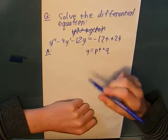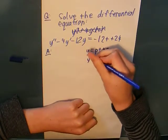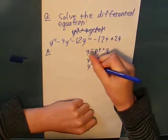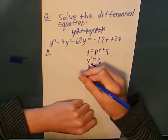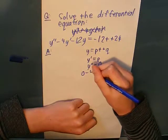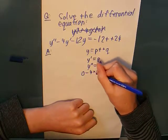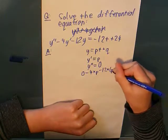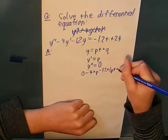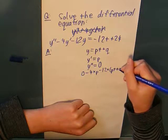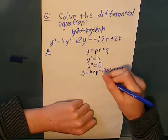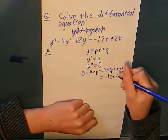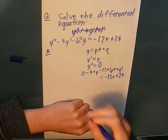Let's substitute this in. So, I know y prime is p, and y double prime is 0. So, 0 minus 4 times p minus 12 times pt plus q equals minus 12t plus 24.